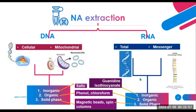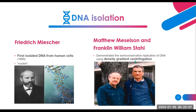Friedrich Miescher was a Swiss biochemist credited with the discovery of DNA. He was the first to isolate DNA from human cells in the late 19th century, in the 1860s, when he conducted pioneering work on the chemical composition of white blood cells, isolating a novel substance he called nucleicine — later identified as DNA. His work laid the foundation for our understanding of DNA. His process involved the following general steps: sample collection, cell lysis, nucleic acid extraction, and precipitation.